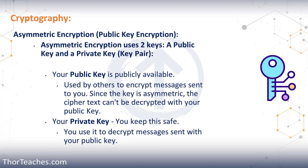If anyone else were to intercept that message encrypted with your public key, they can't do anything with it because they don't have your private key — they can't decrypt the message. That really is the reason why asymmetric encryption is so powerful: we can send messages over an unsecured medium like the internet without needing a preset shared key, which has always been the core problem with symmetric encryption — how do we agree on the secret key, the shared secret?